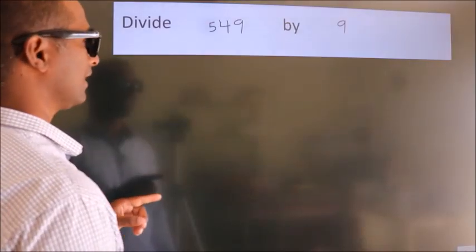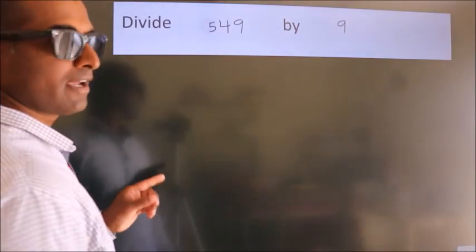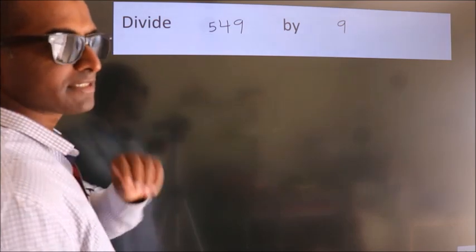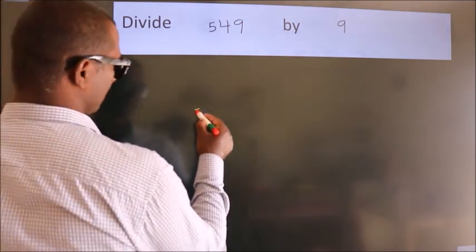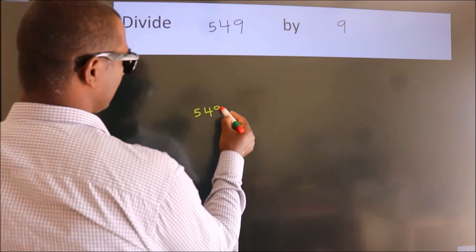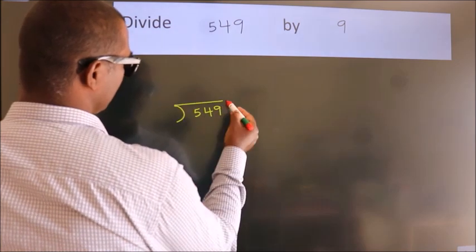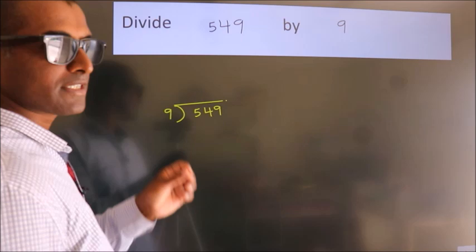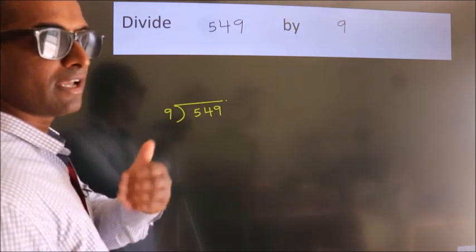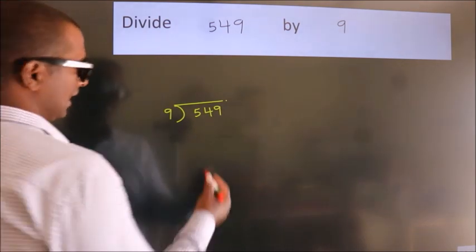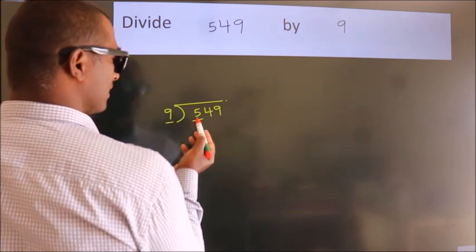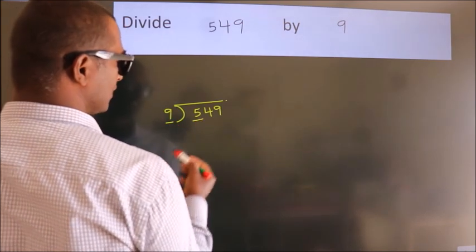Divide 549 by 9. To do this division, we should frame it in this way: 549 here, 9 here. This is your step 1. Next, here we have 5. 5 is smaller than 9, so we should take two numbers.